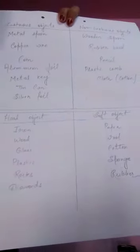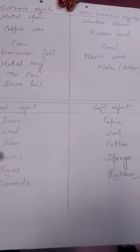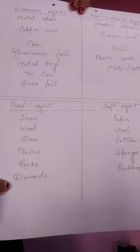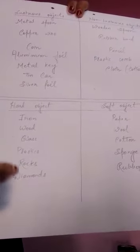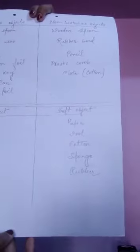Let's look at some objects under hard and soft categories. Iron, wood, glass, plastic, rocks, and diamonds are all very hard objects that are difficult to compress, so they come under hard objects. On the other hand, paper, wool, cotton, sponge, and rubber are very easy to compress, so they come under soft objects.